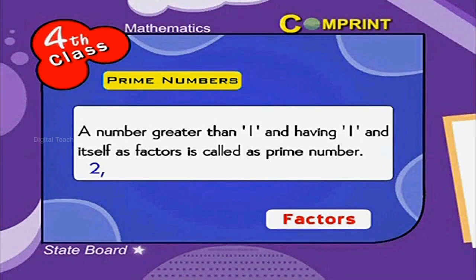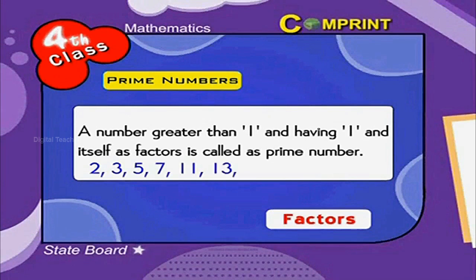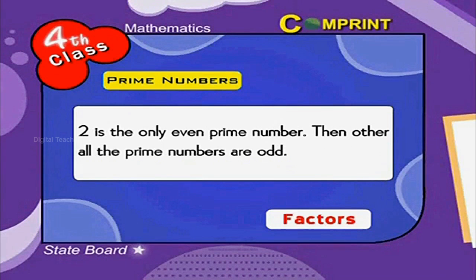For example 2, 3, 5, 7, 11, 13, 17, 19, 23 etc. 2 is the only even prime number, then all other prime numbers are odd.